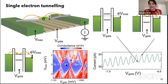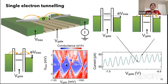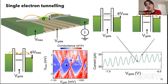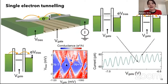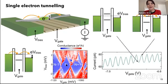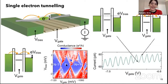Interestingly, we can also use the spin degree of freedom to encode a spin qubit in these devices — typically spin-valley qubits. So this system has quite interesting traits: we have a qubit and a mechanical resonator. Let me show you how these two things talk to each other.